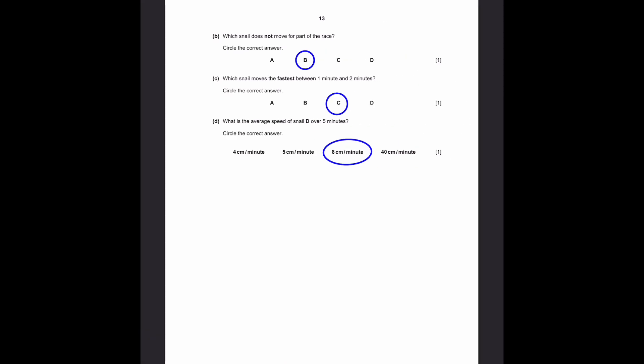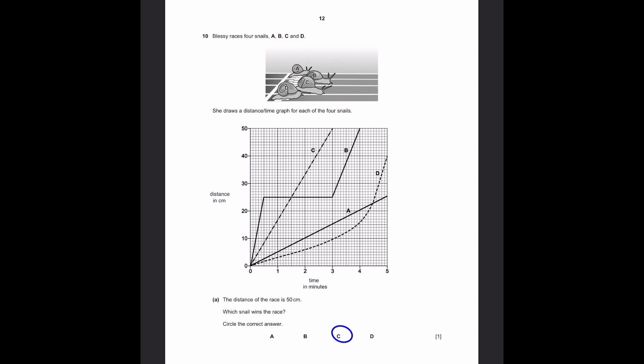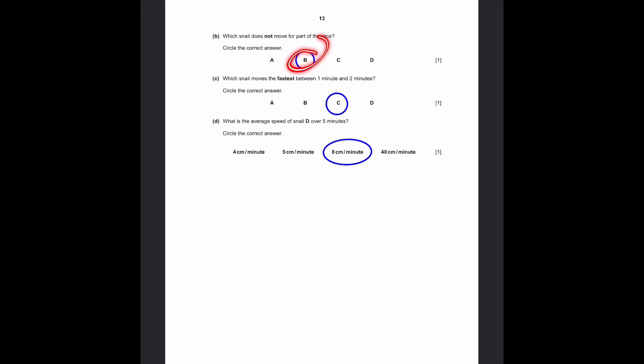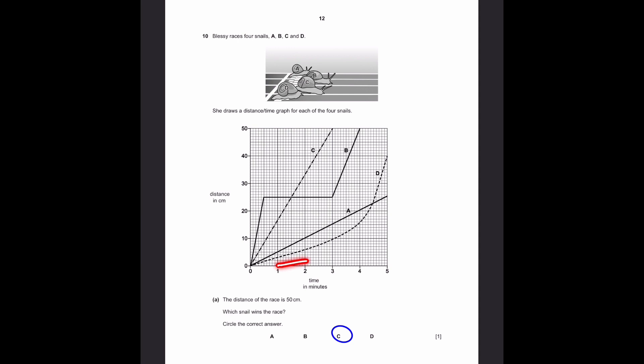Which snail does not move for part of the race? Circle the correct answer. If you go back to the distance time graph, we can see that this section of snail B is horizontal, which means it does not move. So, that's why the answer is snail B for this. And for part C, which snail moves the fastest between 1 and 2 minutes? Circle the correct answer. We can go back. Between 1 and 2 minutes is like this. And out of this, D and A move very slow. In 1 and 2 minutes, this section. And then for B, it is stationary. It's not moving. But for C, it's moving extremely fast compared to the others. So, the answer is C once again.